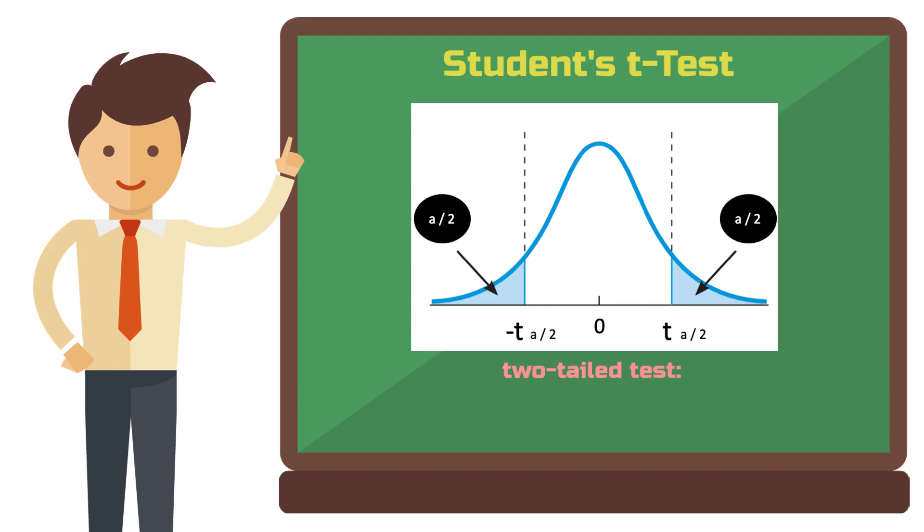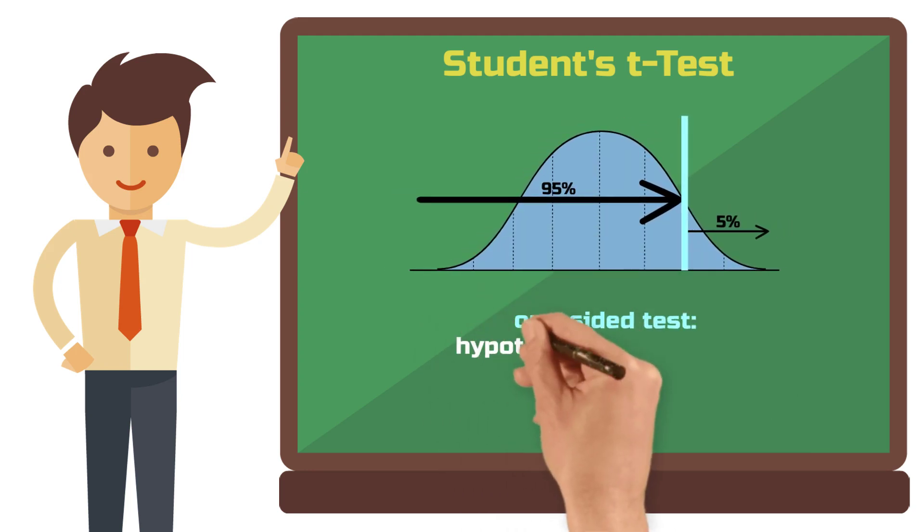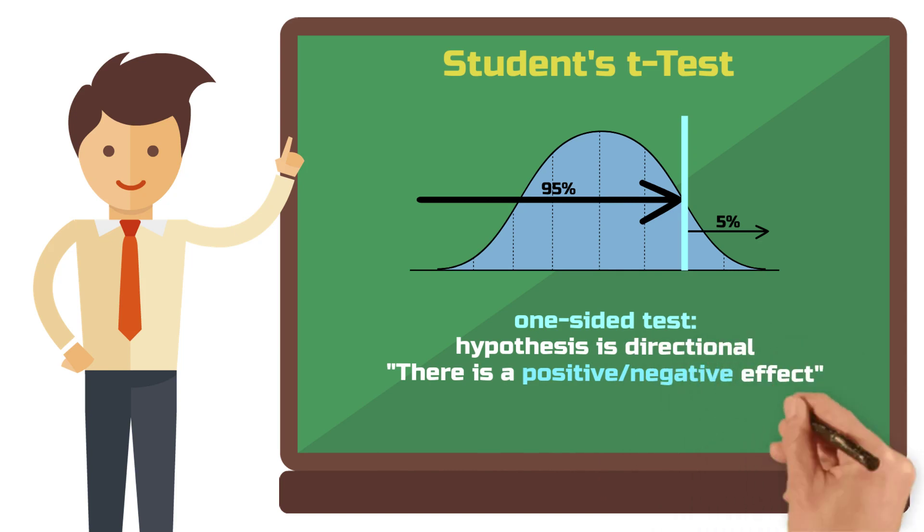A two-tailed test is used when the hypothesis is non-directional, so there is some effect but we don't know in which direction. The test is one-sided when the hypothesis is directional. For example, there is a positive effect or there is a negative effect. In that case, the entire alpha, so for example our 5% of the significance level, is allocated to one side of the distribution, depending on the direction of the hypothesis.